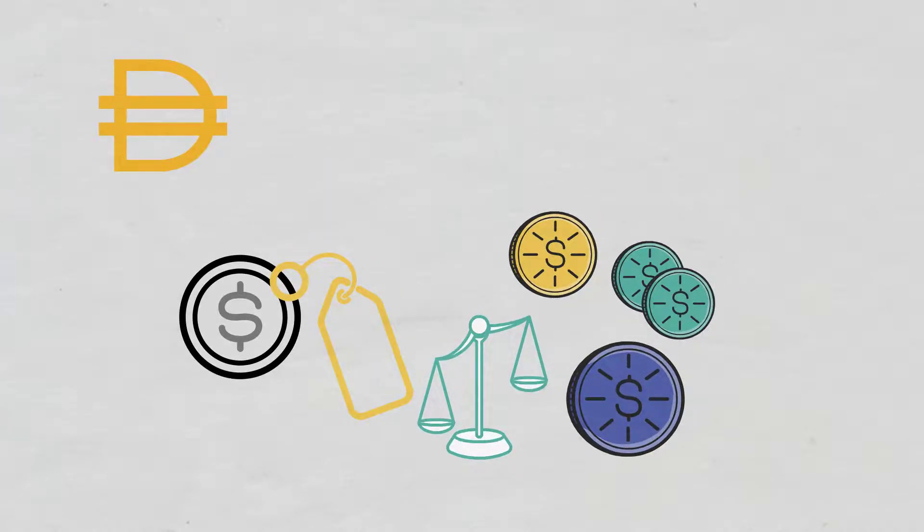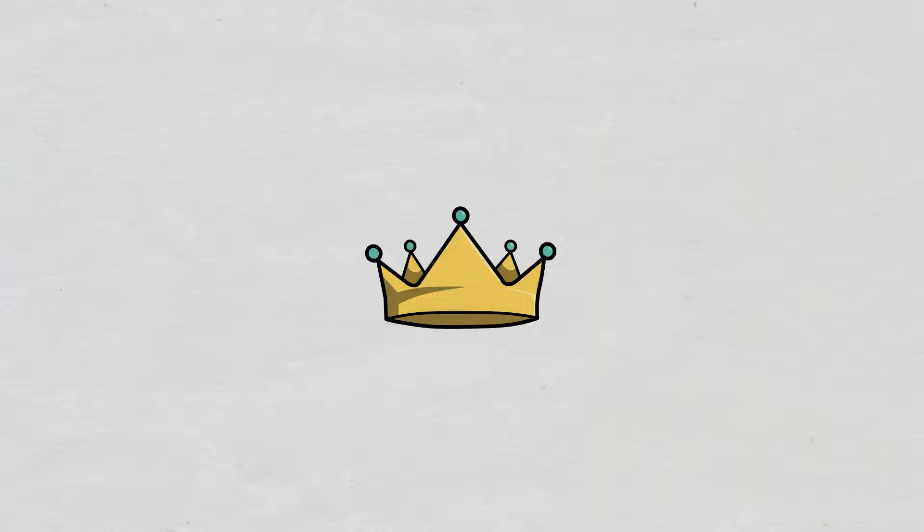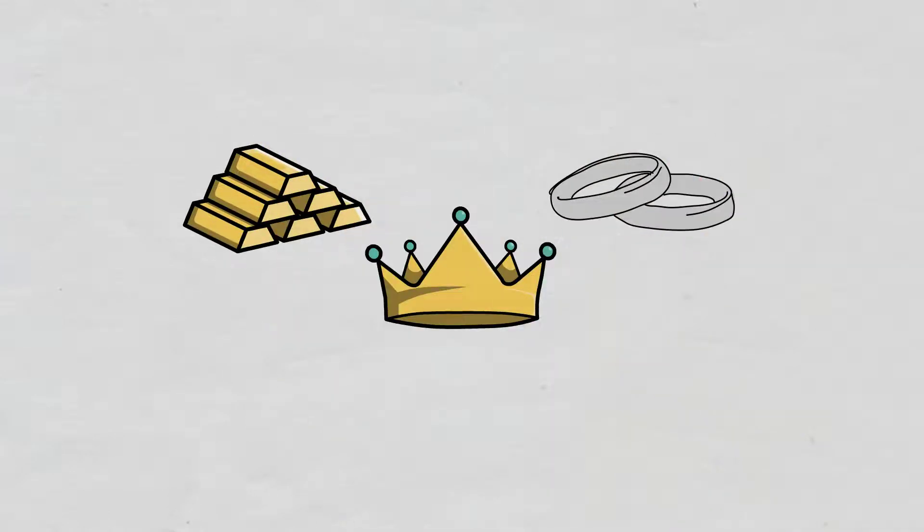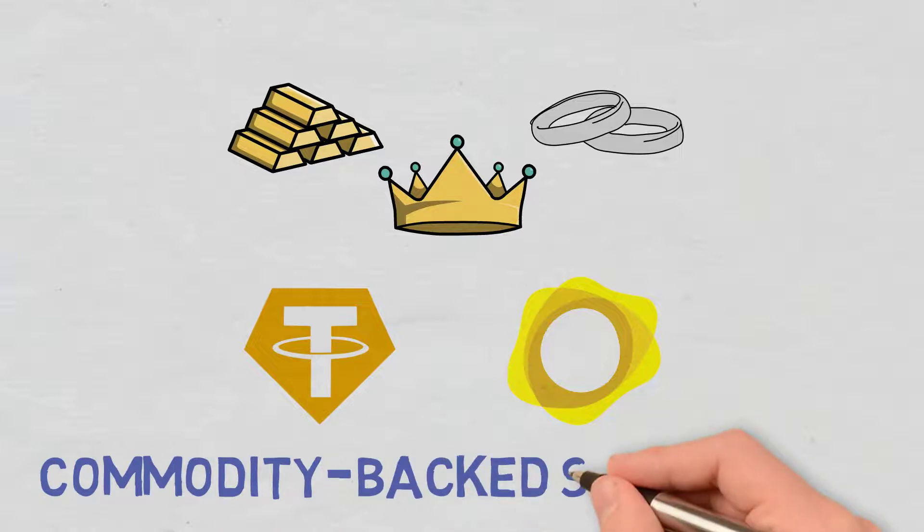The third and last type is represented by those stablecoins that use other commodities as collateral, such as gold, platinum, and so on. The best-known such coins are Tether Gold and Paxos Gold, labeled as commodity-backed stablecoins.